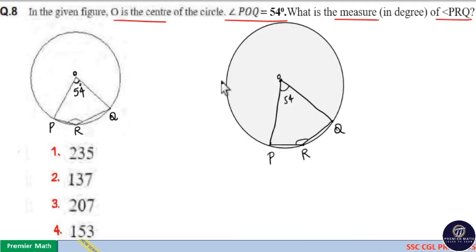Here, angle POQ is 54 degrees, which means reflex angle POQ is equal to 360 minus 54, which equals 306 degrees.